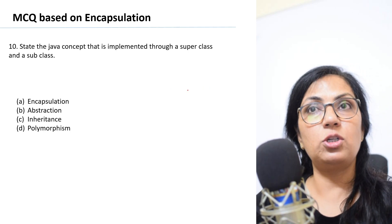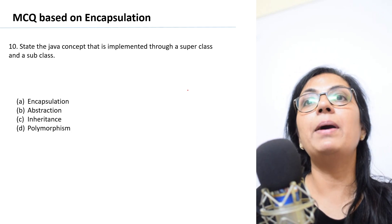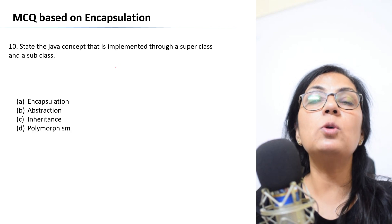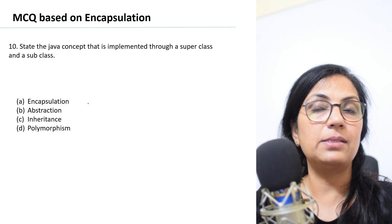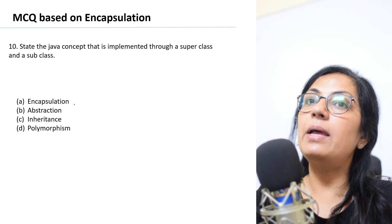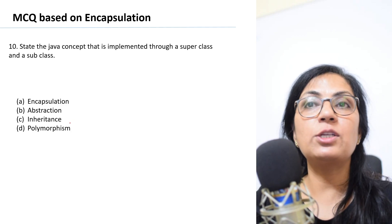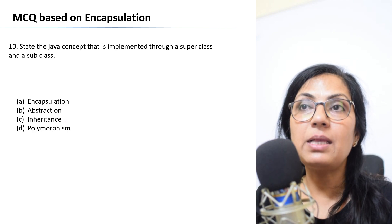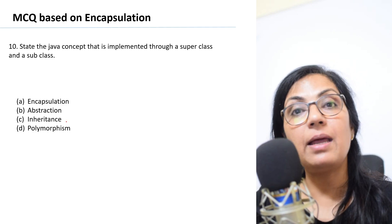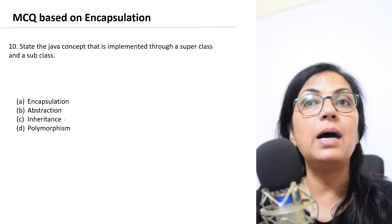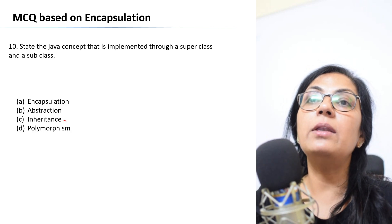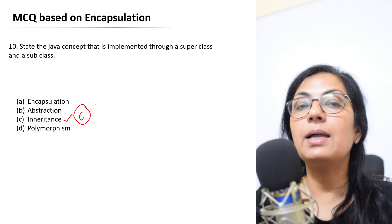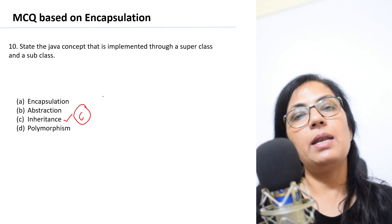The last question: State the Java concept that is implemented through a superclass and a subclass. The options are encapsulation, abstraction, inheritance, and polymorphism. Subclasses, superclasses, and derived classes are all terms used in inheritance, so option C — inheritance — is the correct answer.